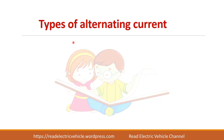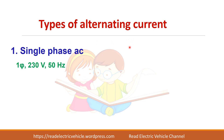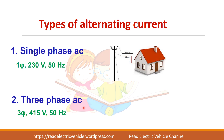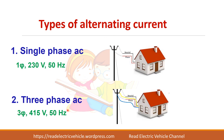Let us see the types of alternating current. We have single phase AC and three phase AC for domestic applications. Single phase AC is 230 volts, 50 hertz — it may differ in other countries. And in three phase, we have 415 volts and 50 hertz.